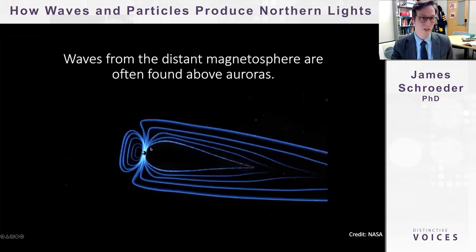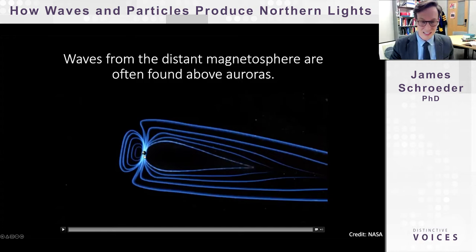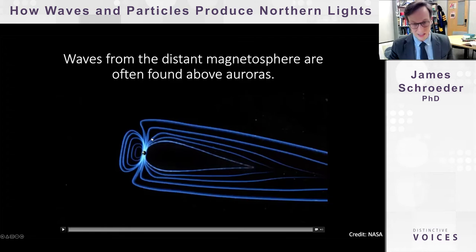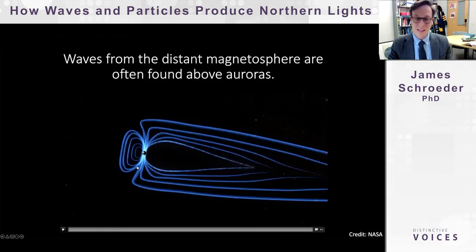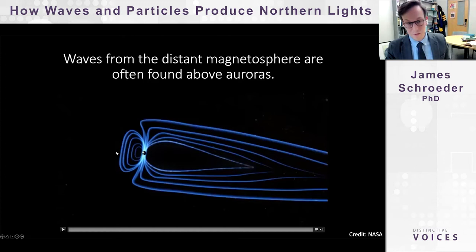It turns out that waves are extremely common above auroras. An artist's animation from NASA shows how waves are produced in Earth's magnetosphere. The magnetosphere is not symmetric as in a simple drawing — the solar wind streaming past Earth distorts Earth's magnetic field. The solar wind coming from the left stretches out the magnetic field, creating disturbances that travel along it. This reconfiguration sends waves — specifically Alfvén waves — traveling along the magnetic field.